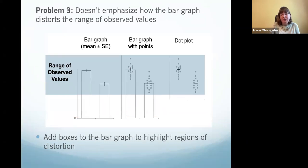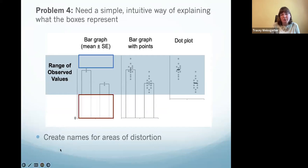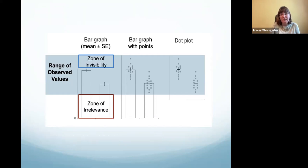The next problem was missing information critical to the message. Part of the message is that the bar graph distorts perception of the range of observed values because data points at the high end may not be shown within the y-axis, and there may be a region near zero where no data points exist but the bar fills in space anyway. So I added boxes to the bar graph to highlight regions of distortion, then named them: the 'zone of invisibility' and the 'zone of irrelevance,' to explain how those zones distort our perception when using a bar graph for continuous data.